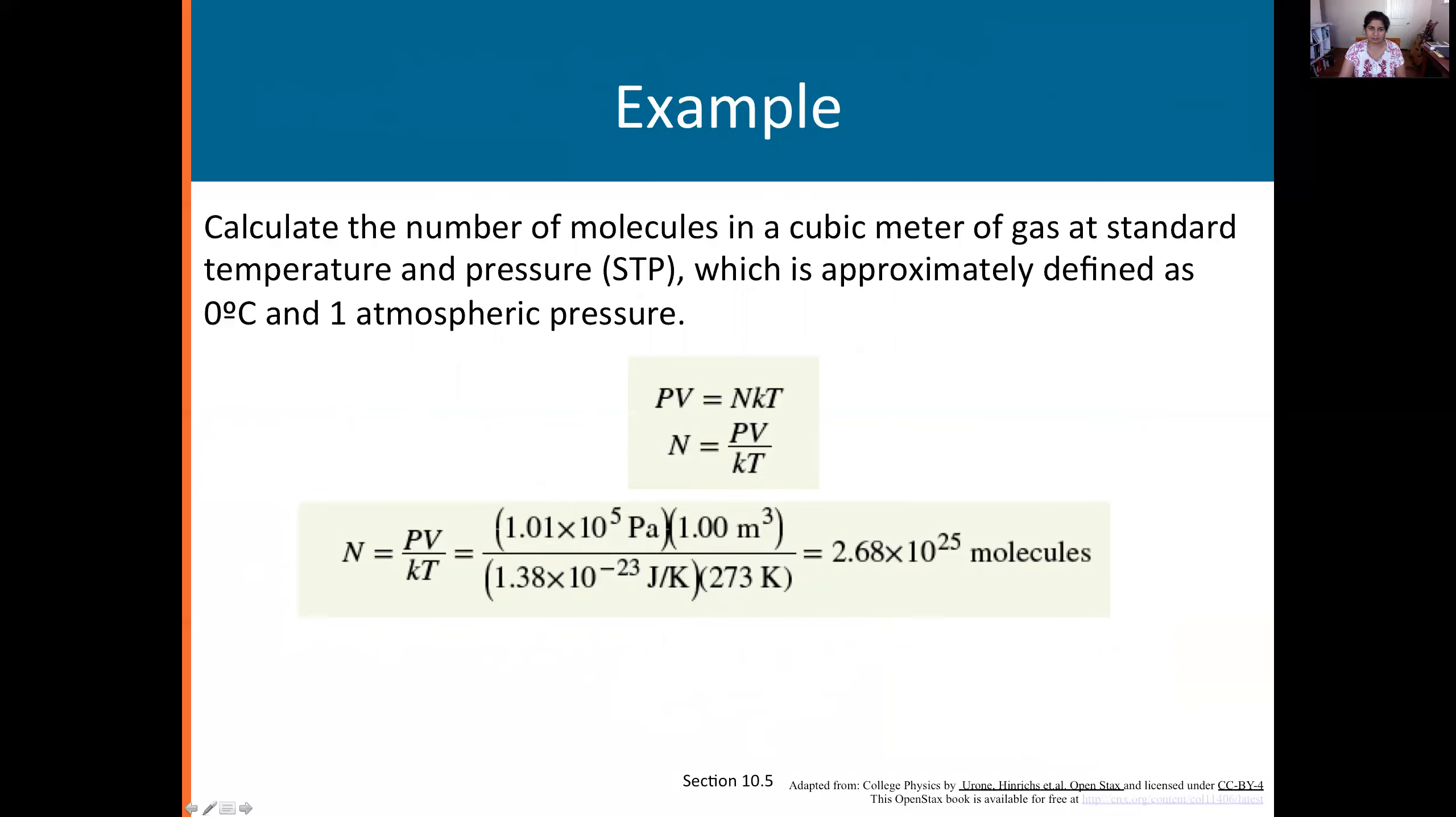Let's do another example. Talk you through this. Calculate the number of molecules in a cubic meter of gas at standard temperature and pressure which is approximately defined as 0 degree Celsius and 1 atmosphere pressure. So you want to take R in atmospheres. So we're going to use PV equals NkBT. This is the microscopic version of the ideal gas law because we want the number of molecules which is uppercase N. Solve for N.